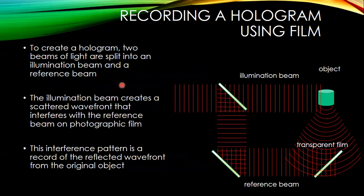To create a hologram, we need coherent light. We illuminate the object with coherent, monochromatic light, and from that illuminating beam the object reflects light in all directions, producing a wavefront which propagates. We then use a reference beam of the same light — basically split off from the illuminating beam. The interference between the reference beam and the wavefronts from the object produces an interference pattern, which is then recorded on film.